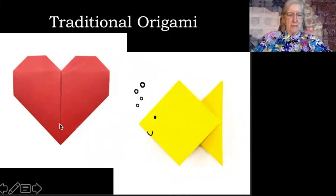Other traditional forms are very simple as well. Here's a simple origami heart. Here's a fish. In case you didn't figure out it was a fish, they added a few cues here in the illustration.